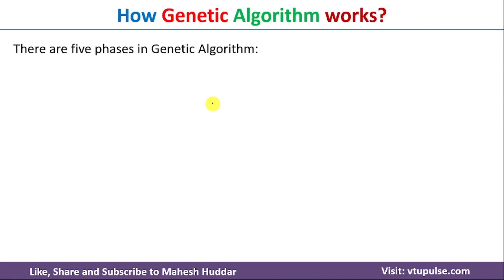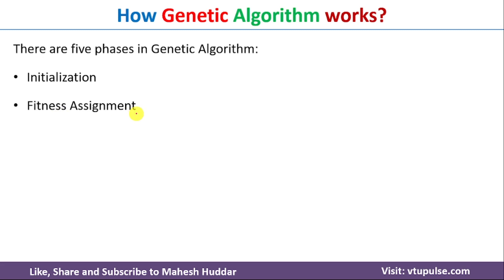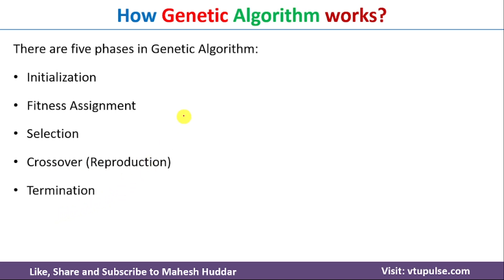Now we will understand how genetic algorithm works. There are basically five phases in genetic algorithm: first is initialization, second is fitness assignment, third is selection, fourth is crossover or reproduction, and fifth is termination.